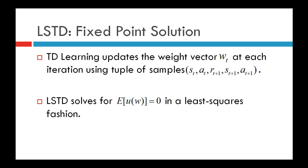Whereas LSTD, instead of updating the weight vector at each iteration until convergence, directly computes the weight vector for which the expected TD update is zero. TD learning updates the weight vector iteratively until it converges to a particular value, whereas LSTD directly solves for the weight vector for which the expected value of the TD update is zero. This is done in a least-squares fashion, resulting in the fixed-point solution. We will discuss the fixed-point solution in later presentations.